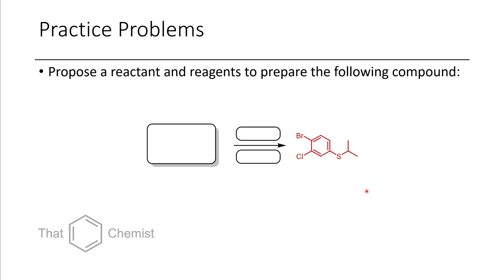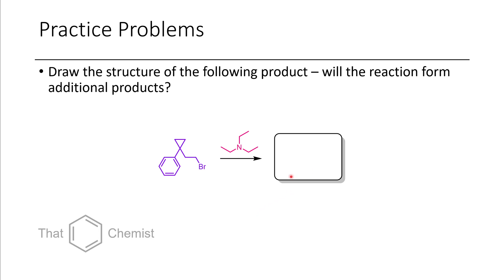I'd like to assign a couple of practice problems as homework. First, propose a synthesis of the following compound — you'll need one starting material, reactant, and conditions if necessary. Second, predict the product of the following reaction and determine whether it will form any additional byproducts from further reactivity. I hope this has been a useful lecture on nitrogen and sulfur-based nucleophiles reacting in an SN2 fashion. If you have any questions or comments, please leave them below. Thank you and have a great day.